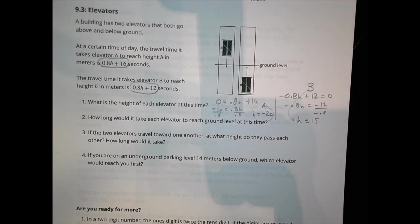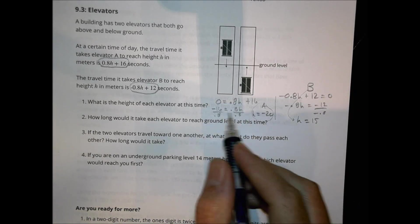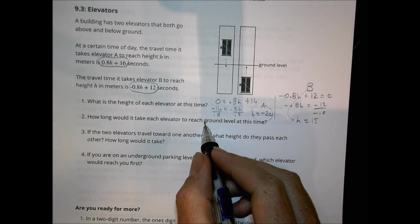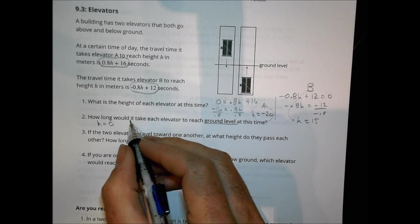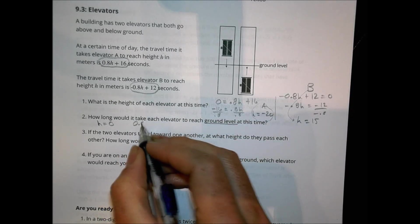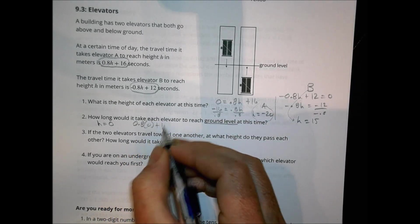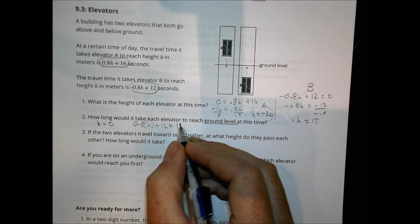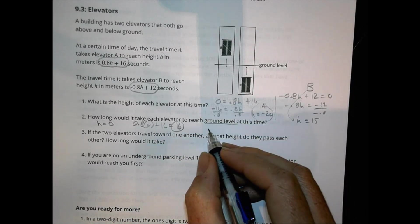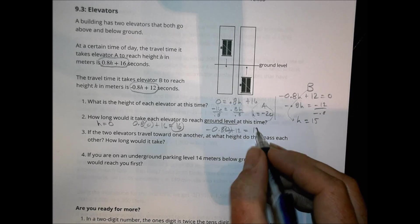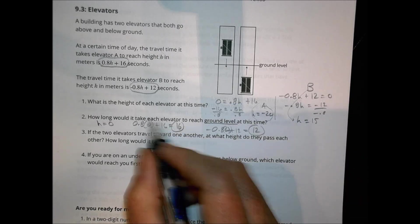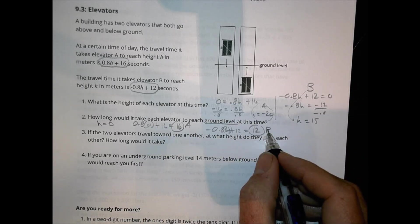How long would it take each elevator to reach the ground level? Ground level means that our height equals 0. So when the height equals 0, 0.8 times 0 plus 16 equals simply 16 for A. And for B, negative 0.8H plus 12 is going to equal, that's 0, is going to equal 12. So A is 16, and B is 12.